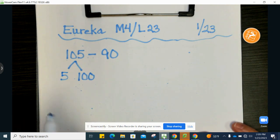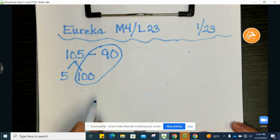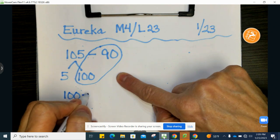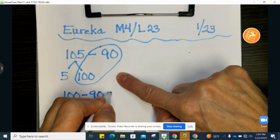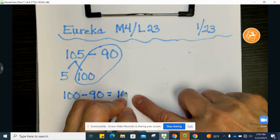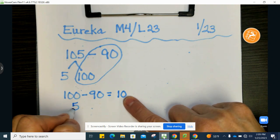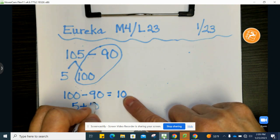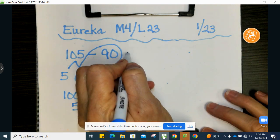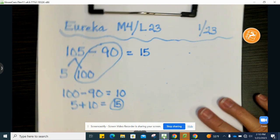The reason why I put 100 over here is because now I can circle this, and I see 100 minus 90. And 100 minus 90 is 10. And then I'm going to add these two parts back together, and I'll write it down here. 5 plus 10 equals 15. So 105 minus 90 is 15.